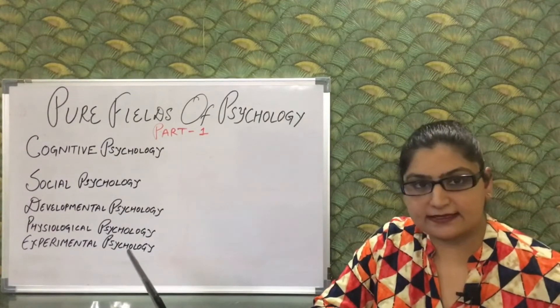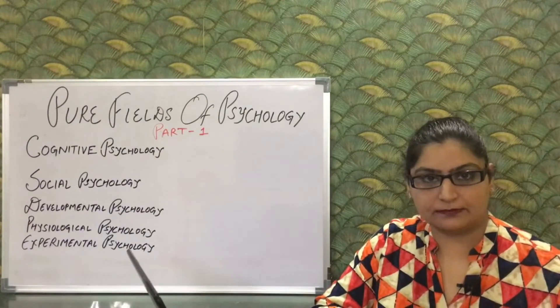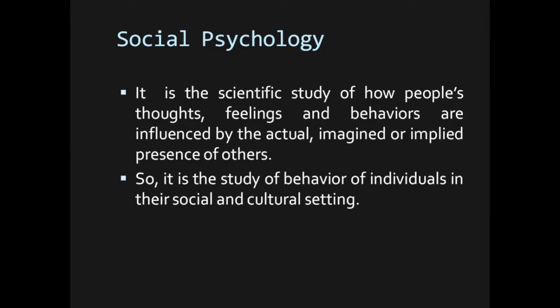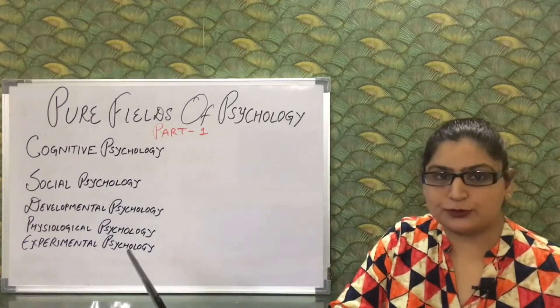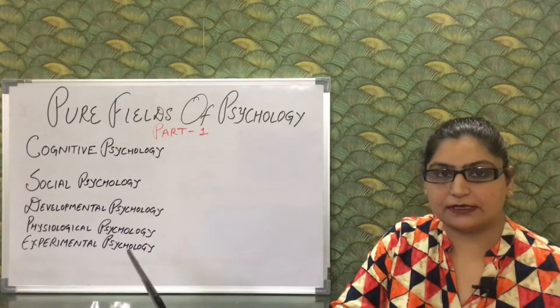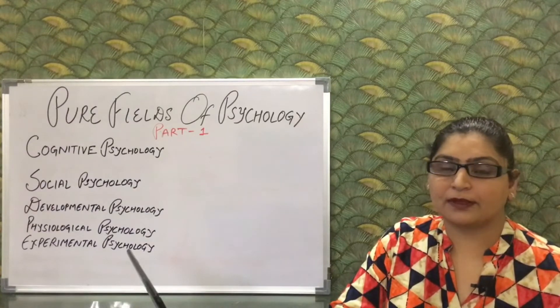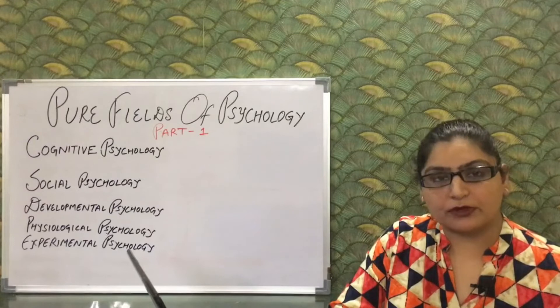Next is social psychology. Its definition: it is the scientific study of how people's thoughts, feelings, and behaviors are influenced by the actual, imagined, or implied presence of others. It is the study of behavior of individuals in their social and cultural setting. Social psychology is a very interesting and vast field.